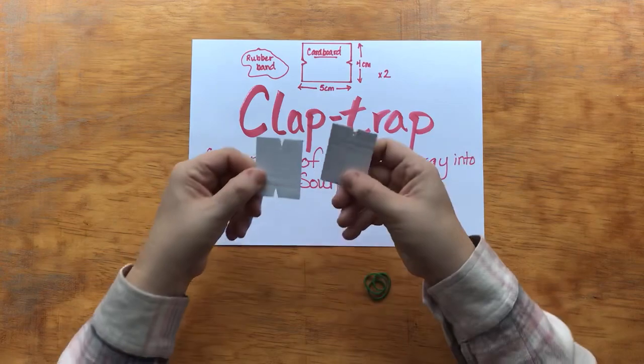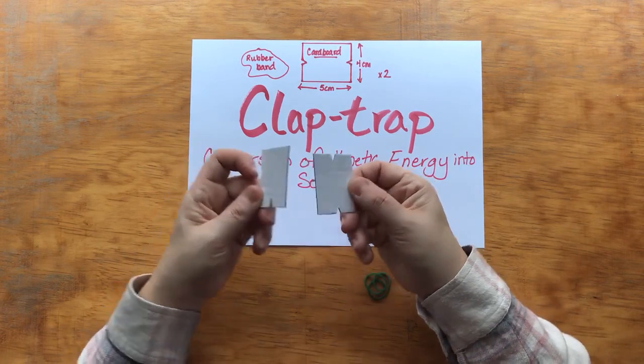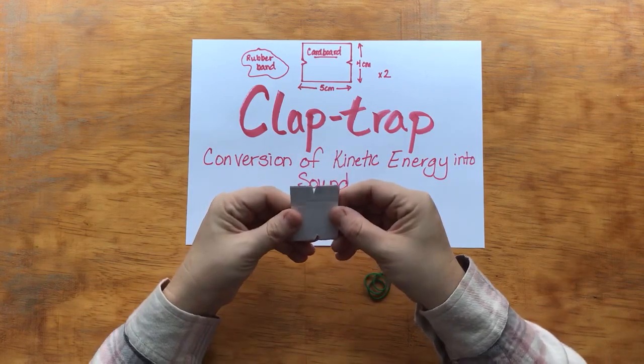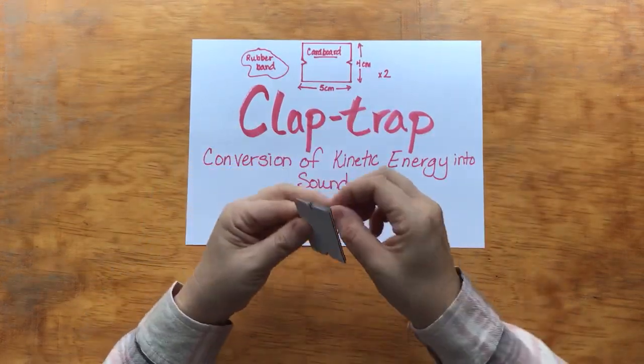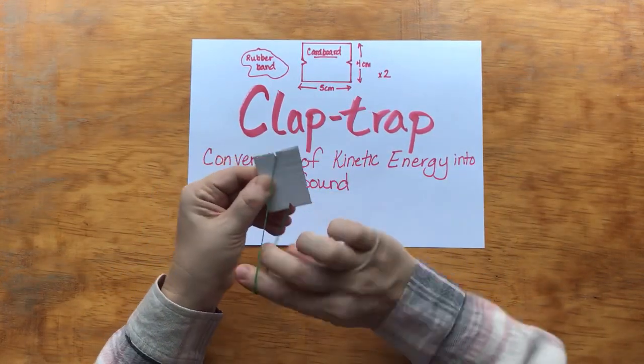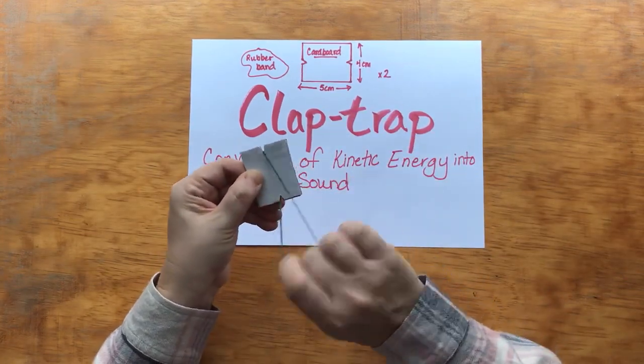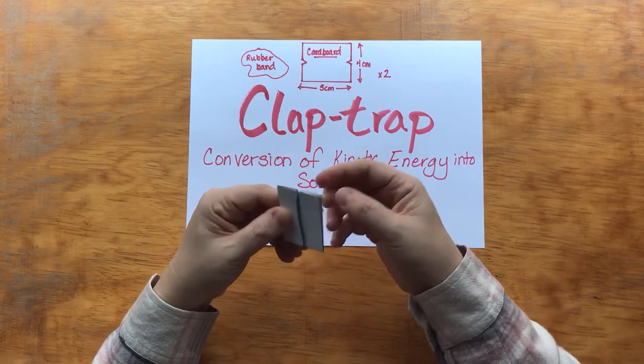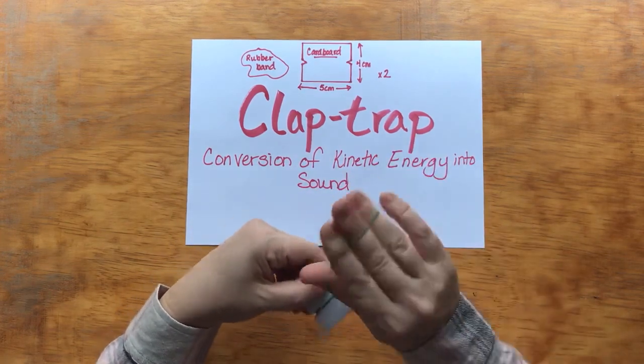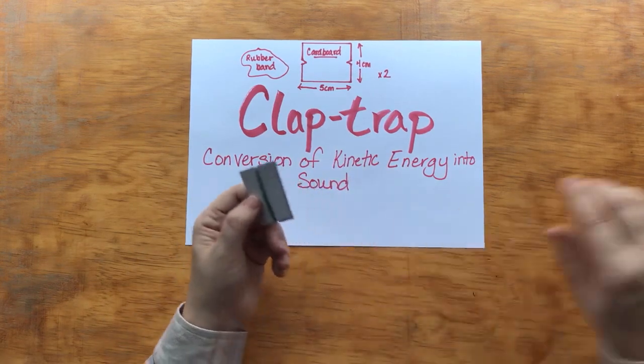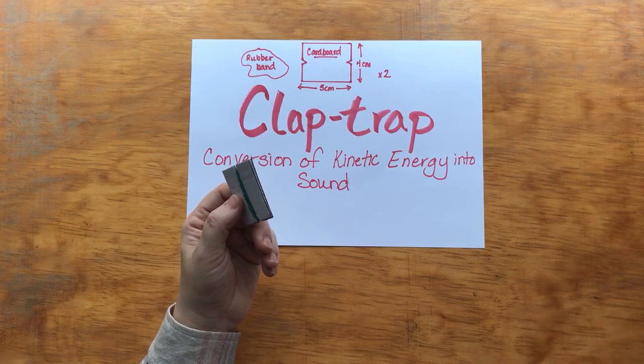So I'm going to end up with two pieces of cardboard looking like that and what you're going to do is you're going to place the cardboard one on top of each other and then you're going to wrap the rubber band around it in the notches and as you can see my rubber band is too big so I'm just going to wrap it around maybe three times so it fits like that.